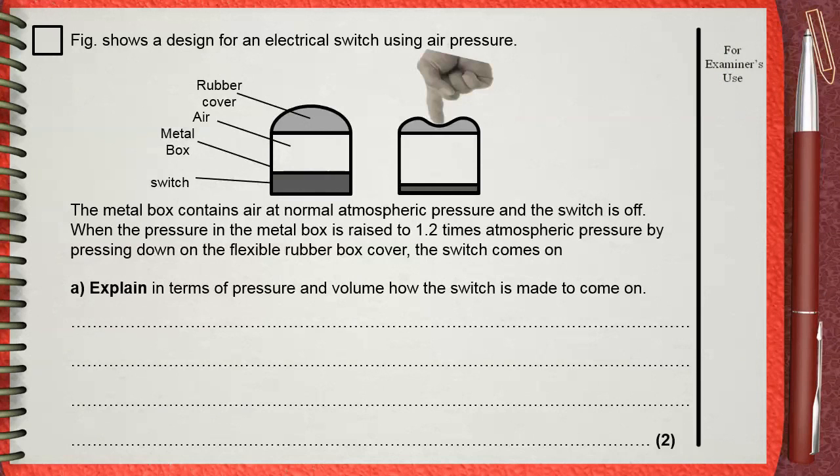Figure shows a design for an electrical switch using air pressure. The metal box contains air at normal atmospheric pressure and the switch is off.